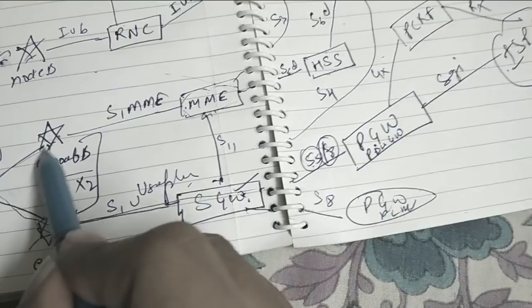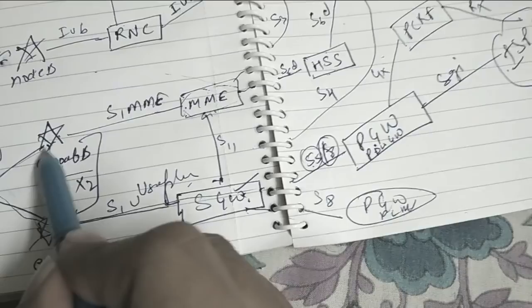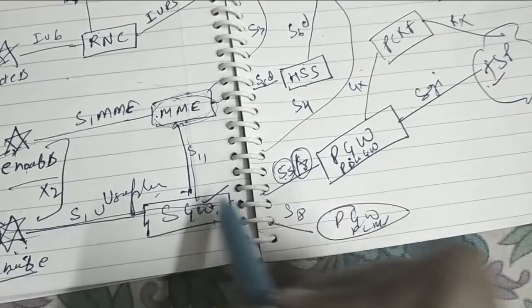The subscriber moves directly from eNode B to SGW, then PGW, then to ISP. Then we call it User Plane. The subscriber moves from 4G to MME first for mobility management to check security and authentication, then it moves to SGW then to PGW. That is called the Control Plane.